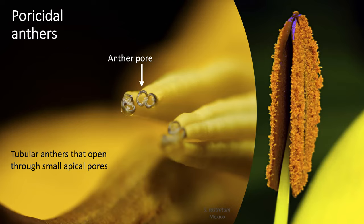There are variations in anther shape and morphology even within the genus Solanum. Some species have larger pores or tear-shaped openings that start opening with a slit towards the base of the anther. In some cases the whole anther is opened along the longitudinal axis, but in general, Solanum flowers are characterized by having this tube-like structure that holds the pollen inside even when the flower is mature.